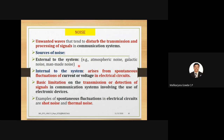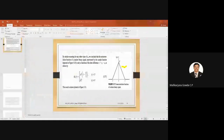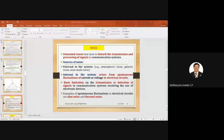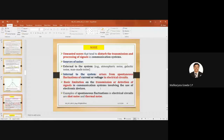External noise sources include atmospheric noise, galactic noise, and man-made noise. Examples of man-made noise include clapping and making noise. Atmospheric noise includes lightning and thundering. Galactic noise, also called cosmic noise, originates outside the Earth's atmosphere — space bodies emit waves with very high frequencies. We have no control over these external noise sources.